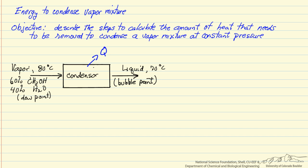In this example I am going to describe the steps we would use to calculate the heat removal to condense a mixture of vapors to a liquid mixture at constant pressure.